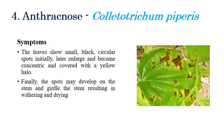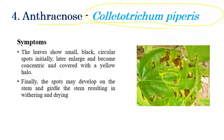The fourth one is anthracnose, which is caused by Colletotrichum piperis. Initially, small black or brown color lesions can be seen. Later, the small spots enlarge in size and form concentric rings, which are covered with a yellow halo. Finally, the spots may develop onto the stems causing girdling, resulting in the withering of leaves in later stages.